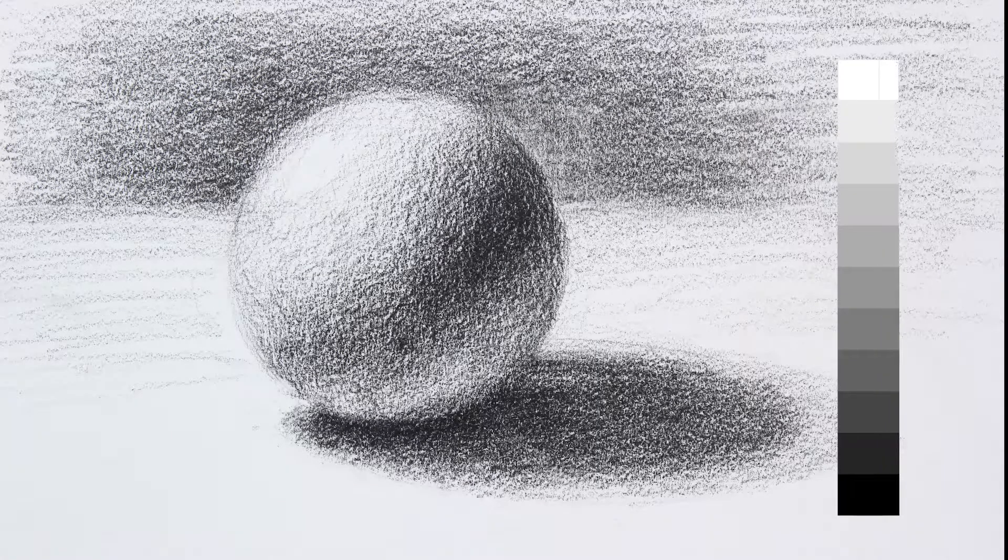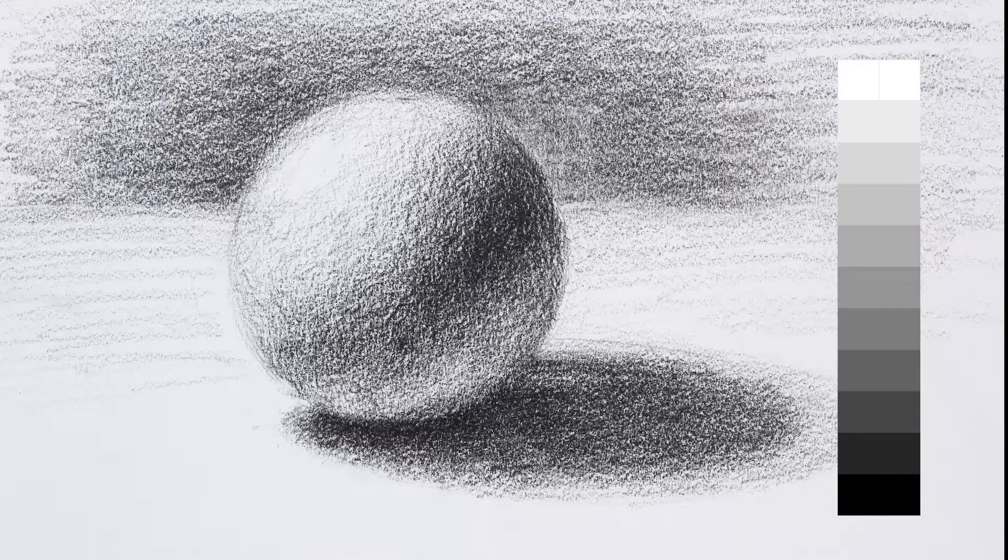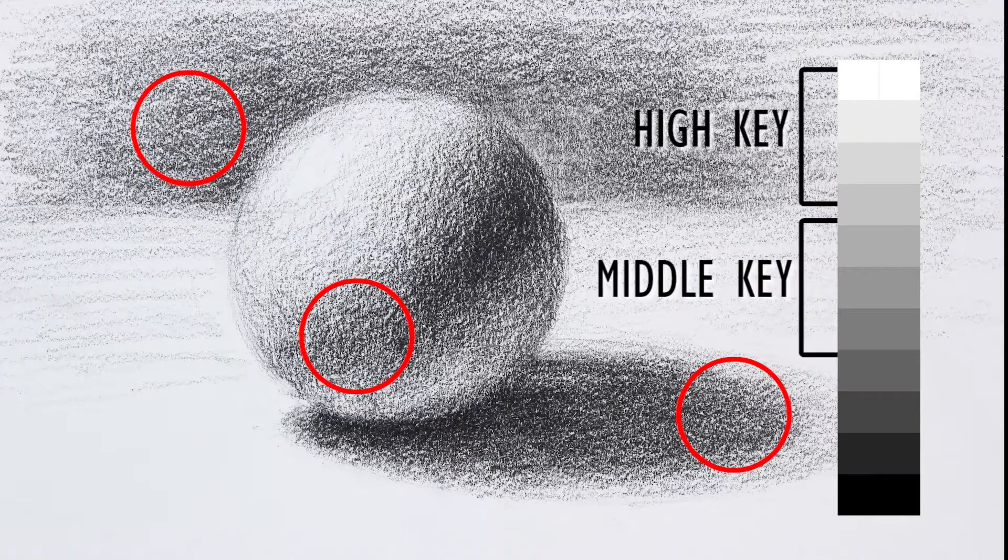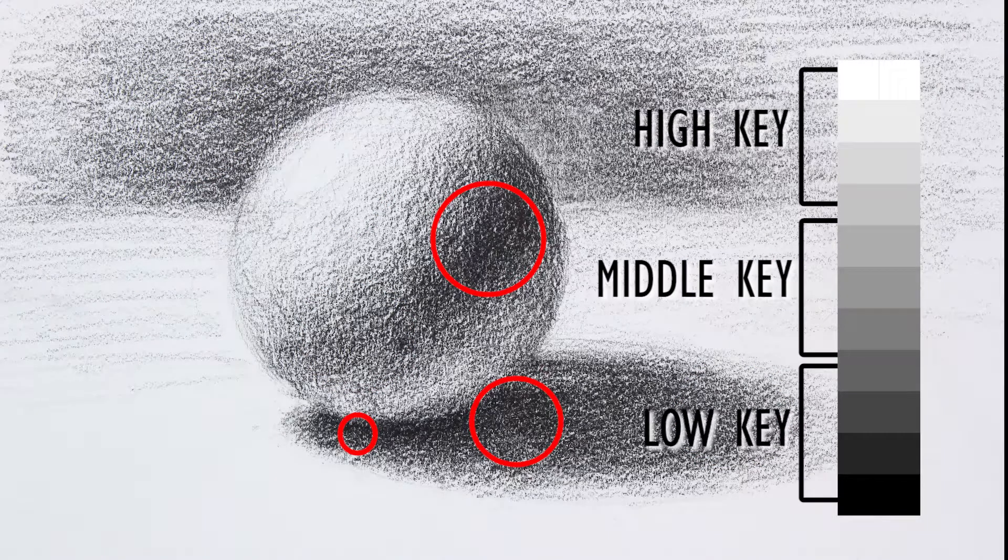If we compare this drawing to a 10-step value scale we can see that it includes every value on the scale. Sometimes it's useful to simplify these values into three general groups: high key, middle key, and low key values.